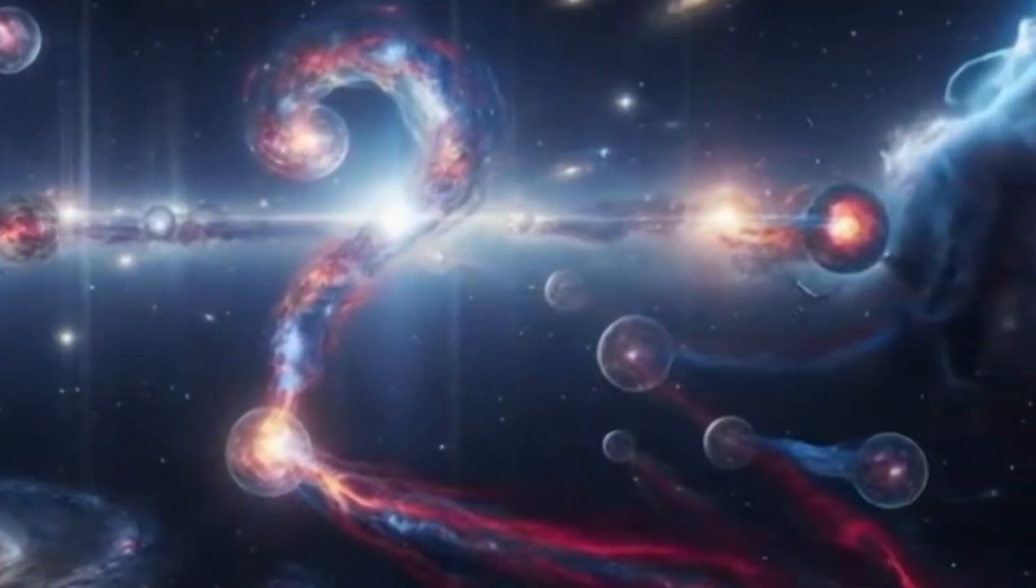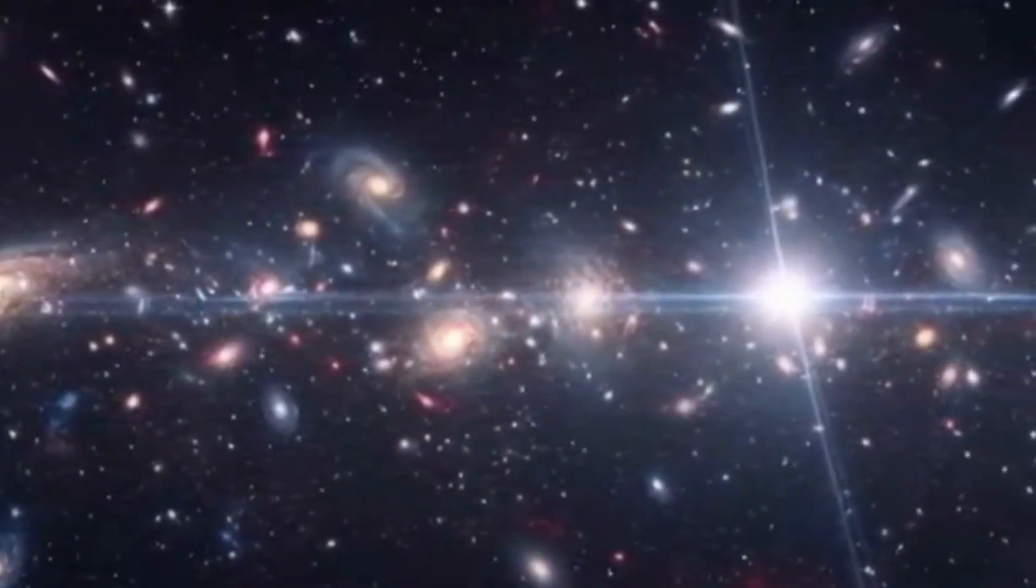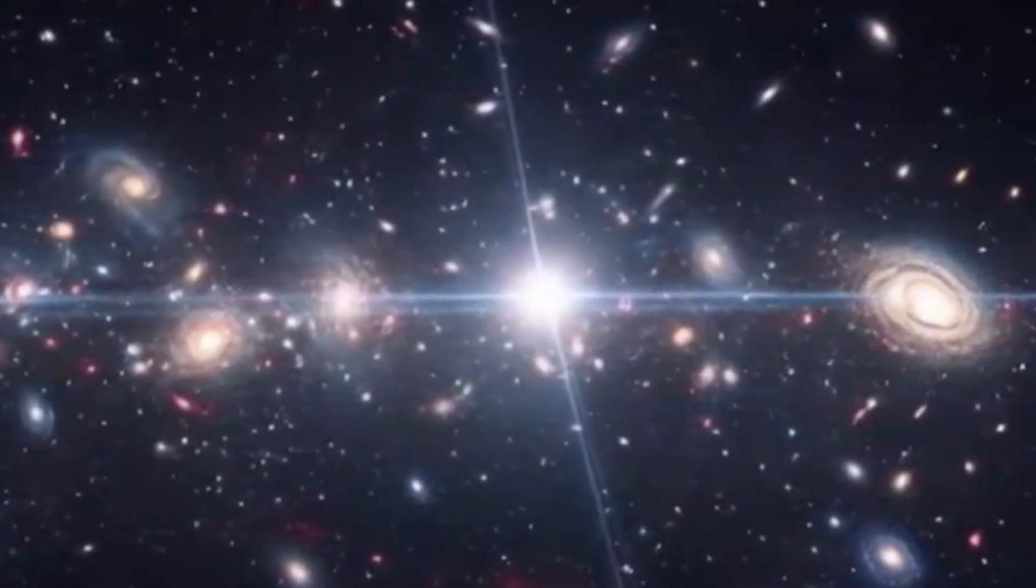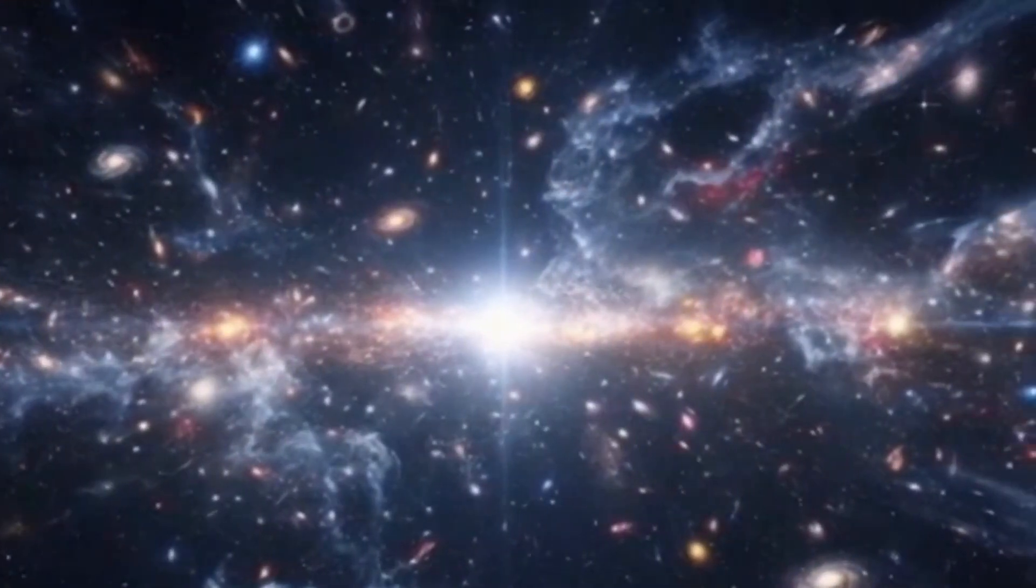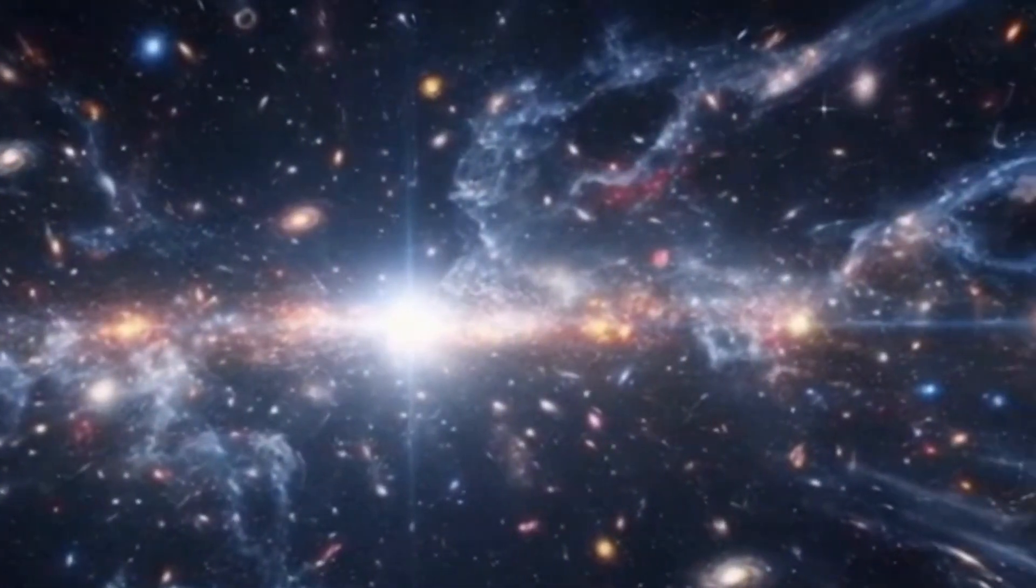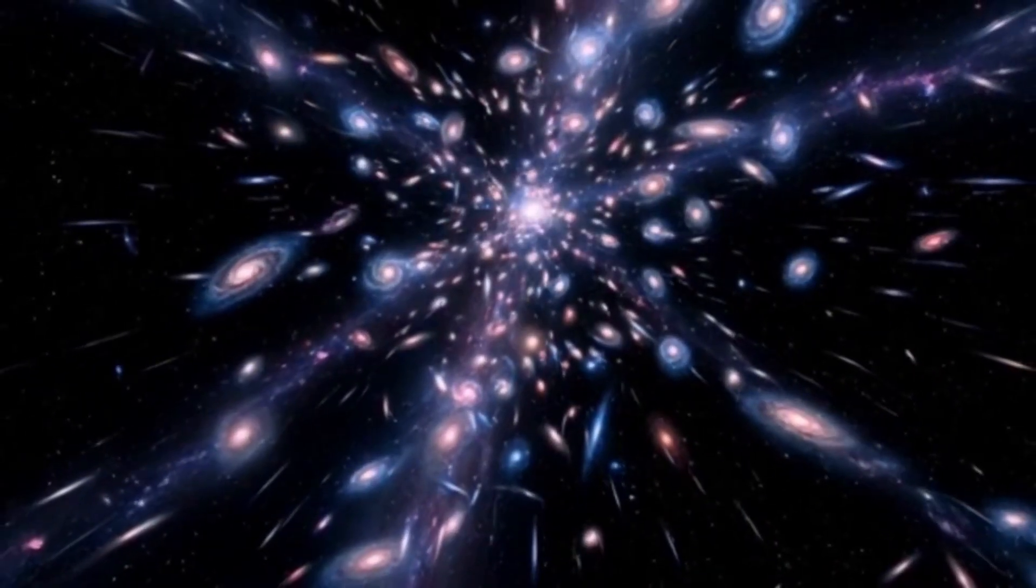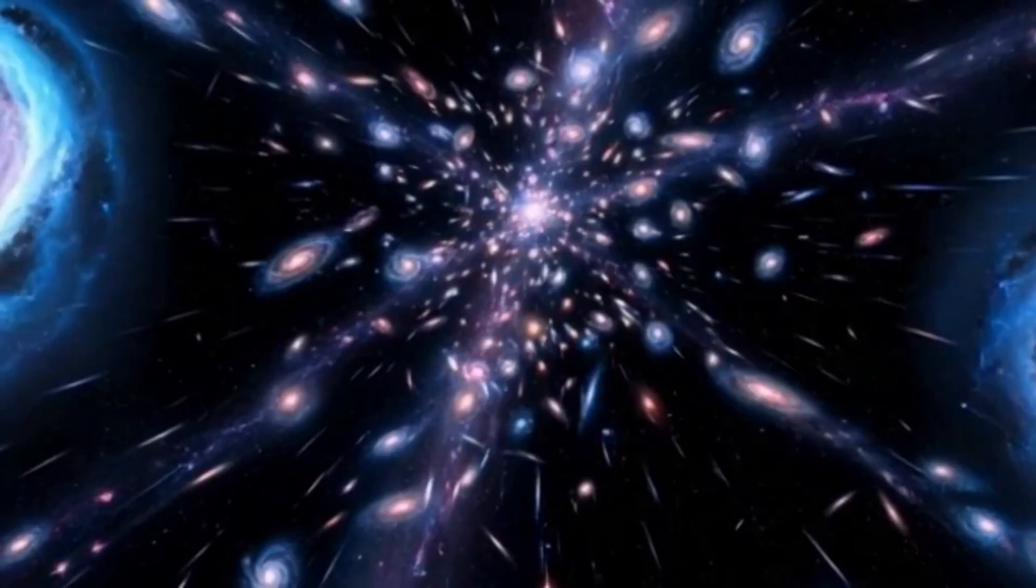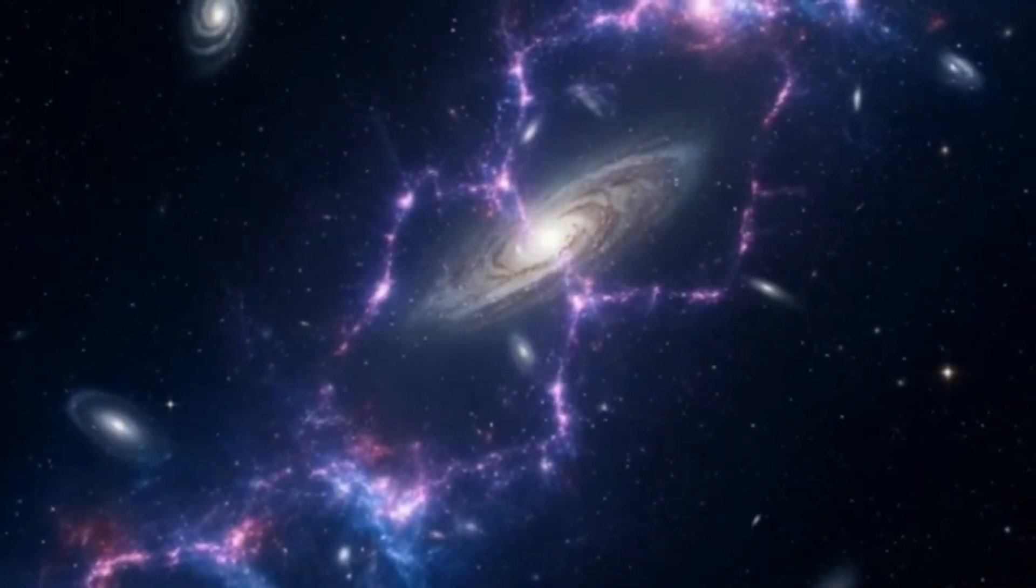According to our current cosmological models, galaxies that formed this early should be small, chaotic and irregular, cosmic toddlers still taking shape. But the Big Wheel is something else entirely: massive, structured and impossibly mature for its age. And it isn't alone. Webb has identified multiple galaxies from this same early period that seemed far too large and developed for their place in cosmic history.